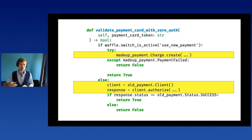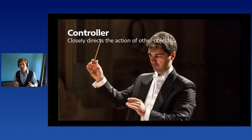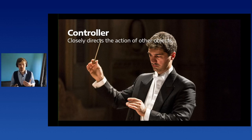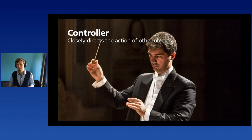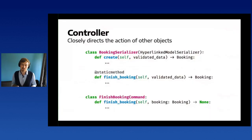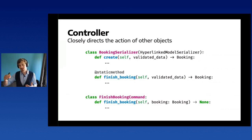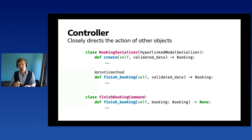The third role stereotype is a Controller — an object that closely directs the actions of other objects, like a conductor telling others what to do and in what sequence. Right now, something like this exists in the codebase, but it's split between the BookingSerializer and the FinishBookingCommand class. To understand the whole flow, you need to jump between two files and two classes. We also want to clarify: we are not trying to work against Django — that hurts.